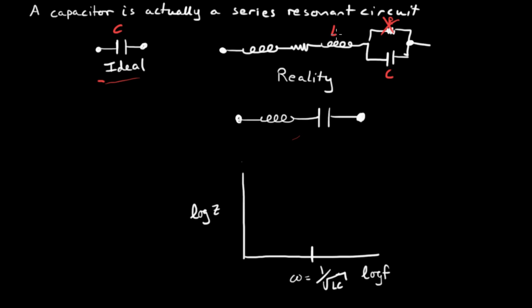There's going to be the equivalent series inductance, which is a function of the package shape that you're using. There's going to be an equivalent series resistance, which is also a function of the package shape. And then there's going to be an inductance from the traces leading up to your capacitor.